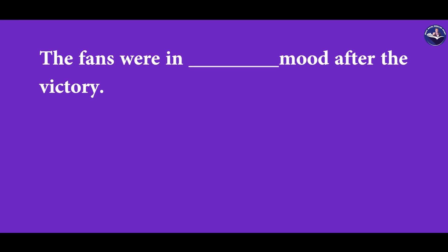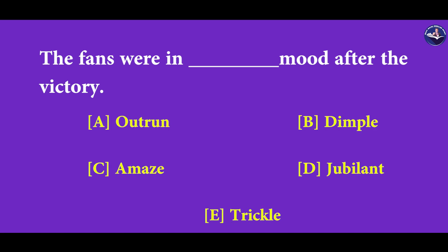The fans were in dash mode after the victory. The options are: outrun, dimple, amaze, jubilant, and trickle.